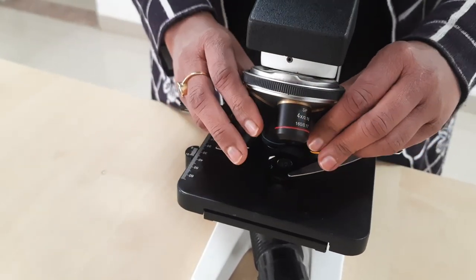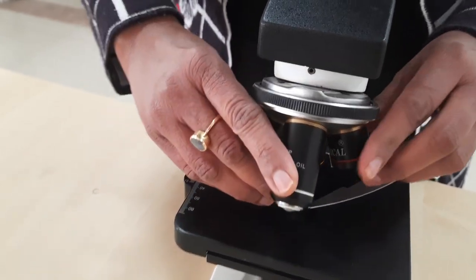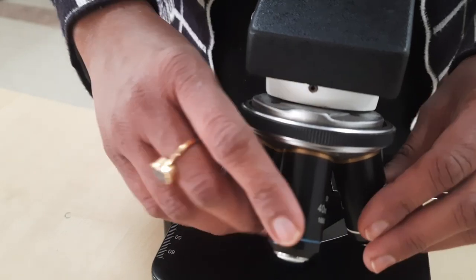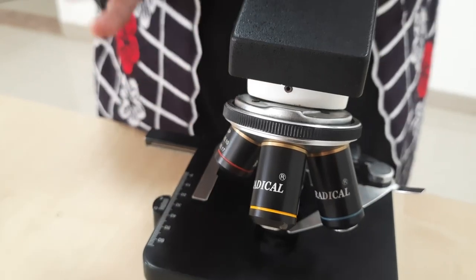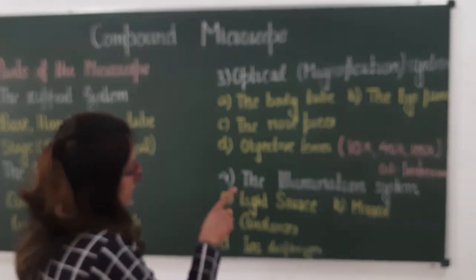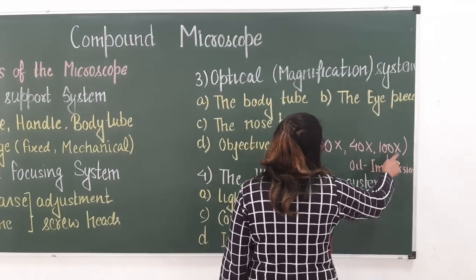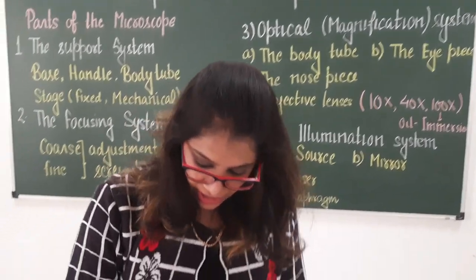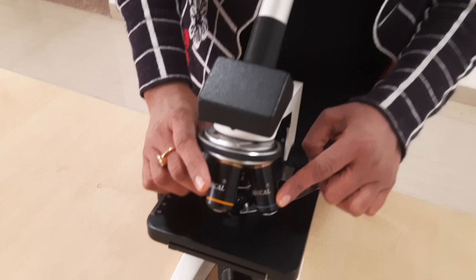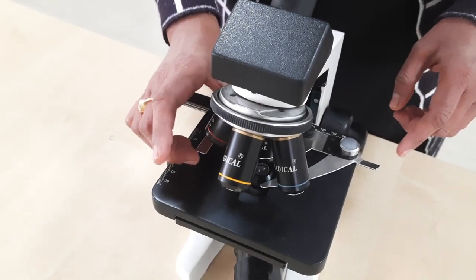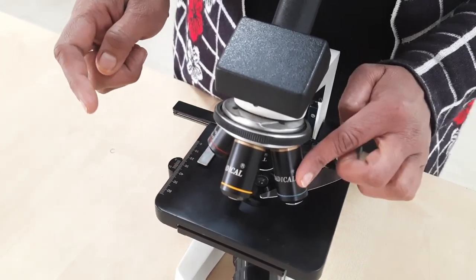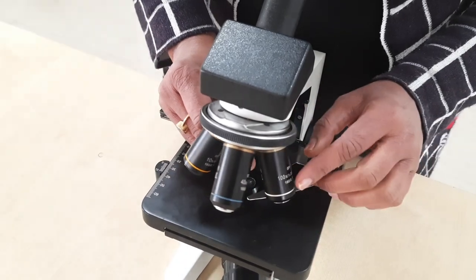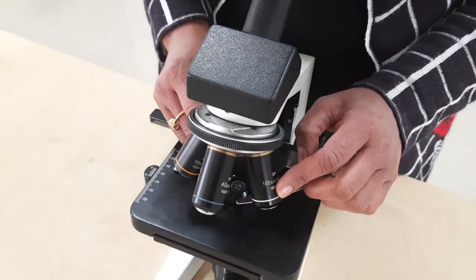Whenever we rotate the nosepiece, the objective lenses click into place — you can hear a click sound when the objective lens is properly positioned. The 10x is known as the low power lens, 40x as the high power lens, and 100x as the oil immersion lens.